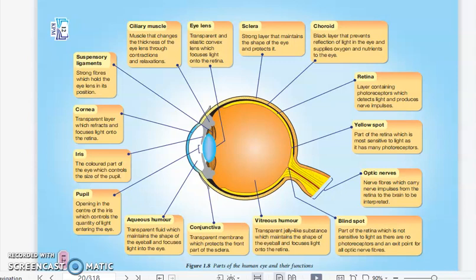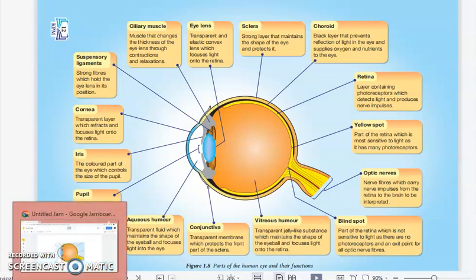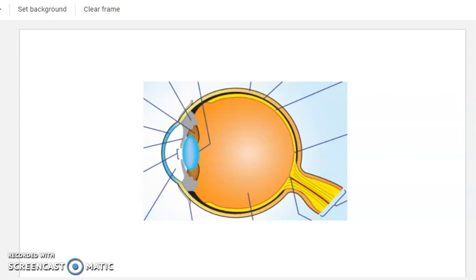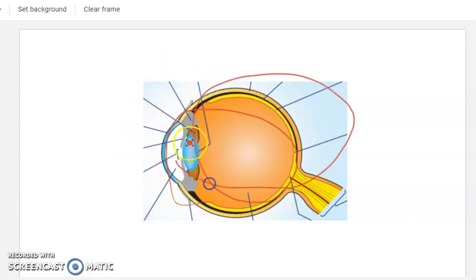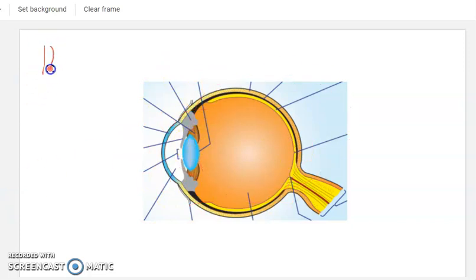Hello students, today we are going to look at eye anatomy. I believe this is one of the hardest topics because there are too many parts to learn. 它太多个部分，太多个 function 你需要背了，所以今天我会用华语，and I will try my best to let you memorize all. Imagine this — in the exam it may come out like this, and you need to label many parts — you need to memorize fifteen parts.